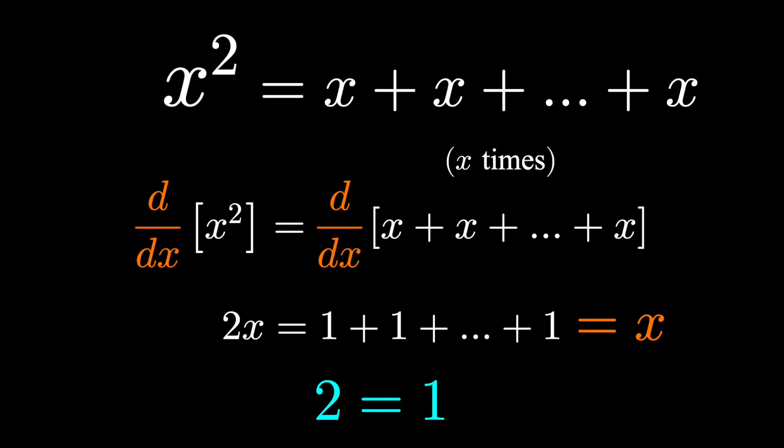And this is where I say a very happy April Fools, of course this isn't true. The very first step, assuming that x squared equals x plus x plus x, x times, is only true if x is an integer.